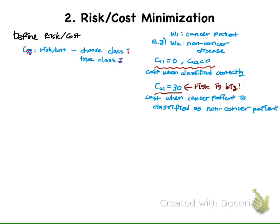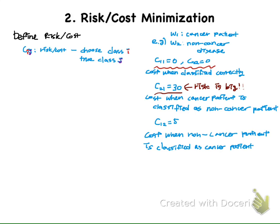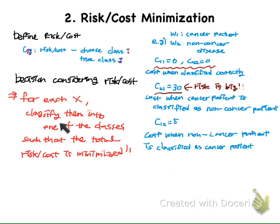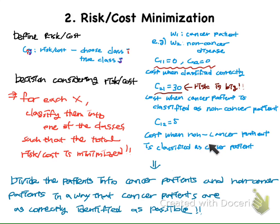This is greater than the other case. When the non-cancer disease patient is classified as a cancer patient, the risk is defined as 5. So we use this risk term to specify which misclassification is more costly. The decision considering risk and cost is: for each X, classify it into the class that minimizes the total risk. Because we have a higher risk of classifying cancer patients as non-cancer patients, we aim to identify cancer patients as correctly as possible.